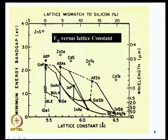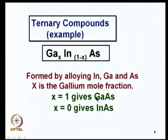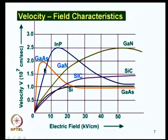For indium phosphide-based devices or gallium indium arsenide, gallium arsenide has a lattice constant of 5.65 Å, while indium arsenide has a larger lattice constant of about 6.1 Å. If you mix them at a particular ratio, you can get a lattice constant of about 5.85 Å, which matches with indium phosphide. You can therefore grow gallium indium arsenide on indium phosphide. This shows that for heterostructures you can have GaInAs on InP, GaAs on Ge, or AlGaAs on GaAs. You can also mix them together.